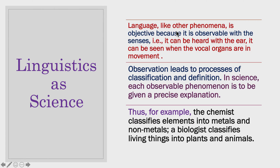Language, like other phenomena, is objective because it is observable with the senses — it can be heard with the ear and seen when the vocal organs are in movement. Observation leads to processes of classification and definition. In science, each observable phenomenon is to be given a precise explanation.